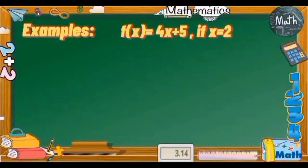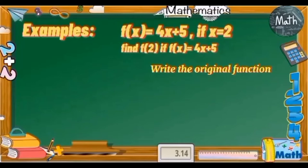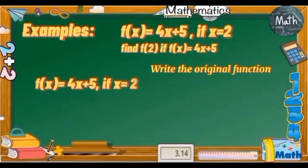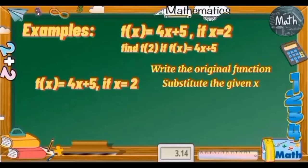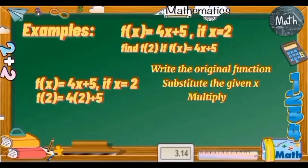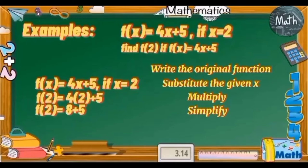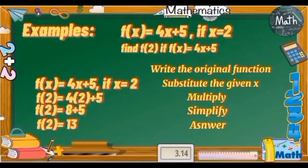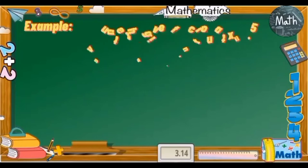Evaluate the function f(x) = 4x + 5 if x = 2. First, write the original function: f(x) = 4x + 5. Then substitute x with 2 — we get f(2) = 4 × 2 + 5. Next, multiply: 4 × 2 = 8, so we have 8 + 5. Finally, simplify by adding: 8 + 5 = 13. Therefore, f(2) = 13. Great job! Now we will move on to another example.